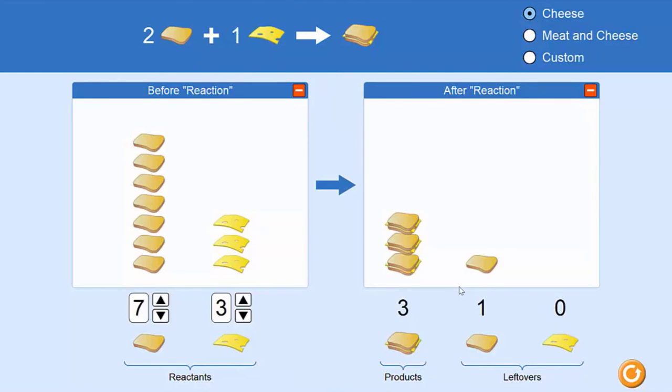The reactant that runs out first is called the limiting reactant because it limits how far the reaction can go. In this example, it was the cheese.